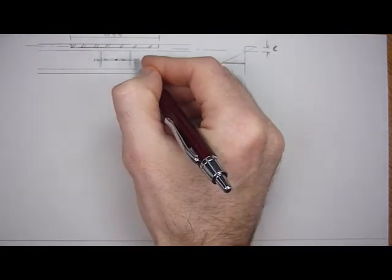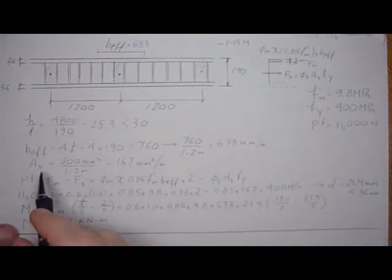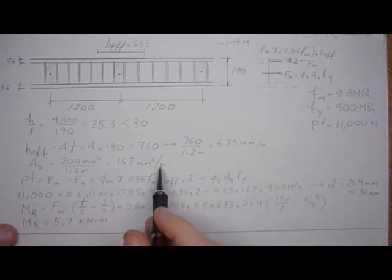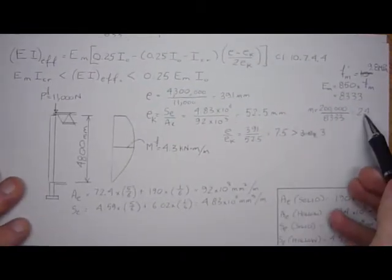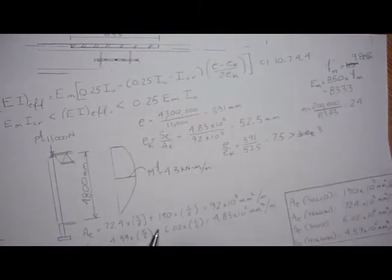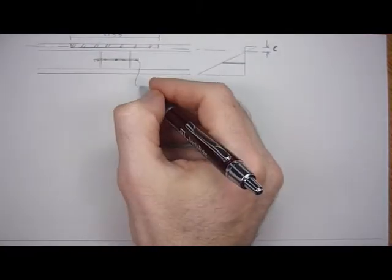And I also have the transformed area of steel. I know the area of steel is 167 millimeters squared per meter. And I also have the n value. Modular ratio is 24. So 24 times 167 is the area of steel transformed.